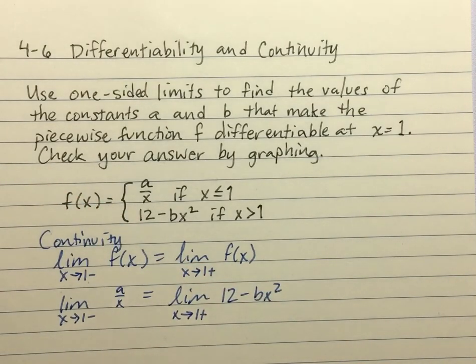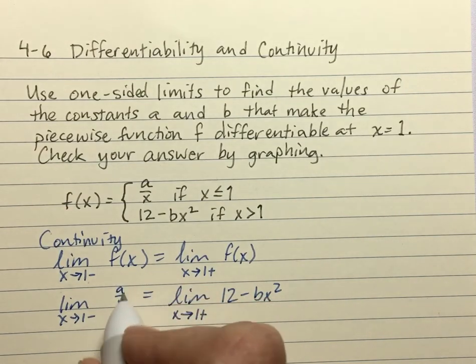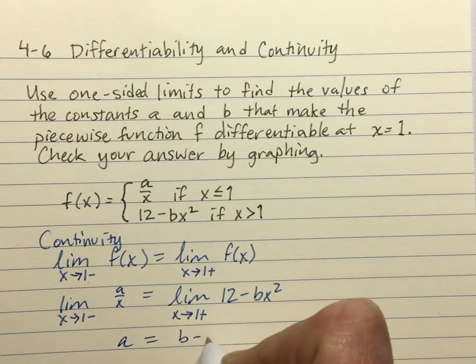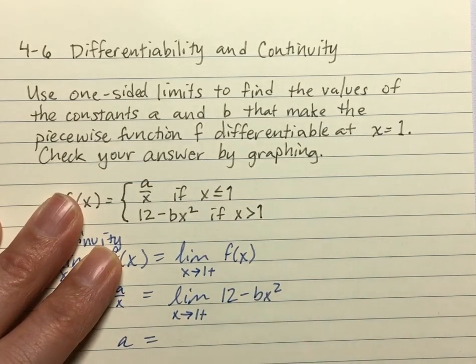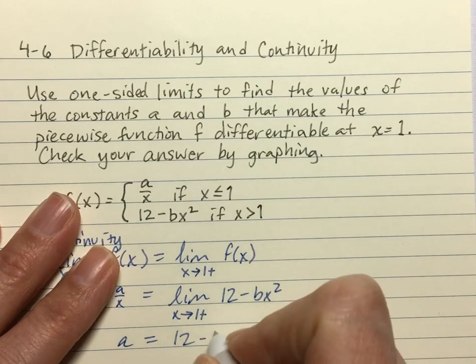So the moment we plug our 1 in, we can drop our limit notation. So I'm going to take my limits by plugging in the 1. So I have a over 1, or just a. And then 12 minus b times 1 squared, or 12 minus b.